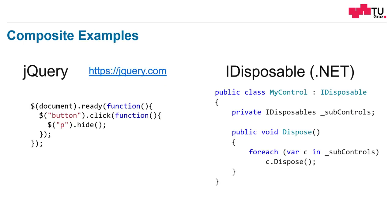Let me give you two examples. The one is from jQuery, and the other one is from the IDisposable interface in .NET. Let's look at the jQuery example first. Here, on our main document, we add another function to the ready event. And in this function, in jQuery, this is called the selector — we select all button elements in our document. And this can be one button, for example a save button on a website. Or these can be multiple buttons. But regardless of how many objects are returned, we add to the click event another function which calls the hide function on all paragraph elements. And again, it doesn't matter if there are multiple or only one p-element on our website.